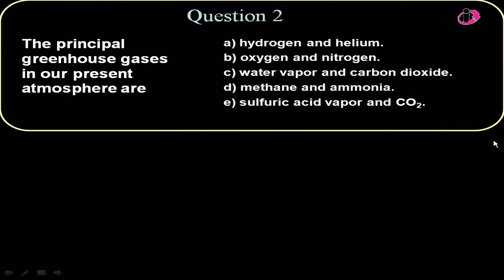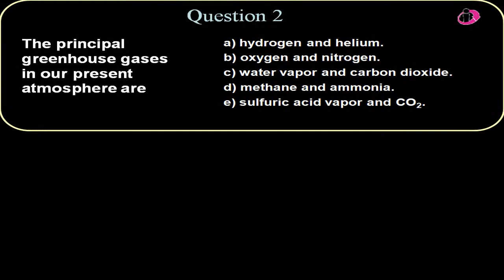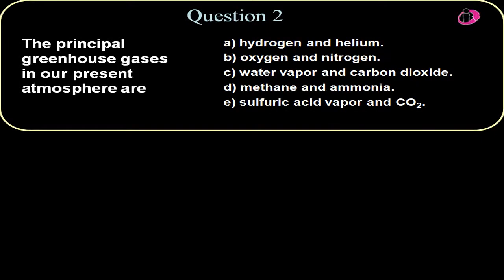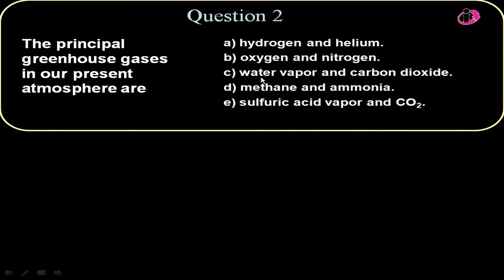Question two. The principal greenhouse gases in our present atmosphere are? Greenhouse gases are those gases that absorb infrared radiation and help warm up the atmosphere. Definitely carbon dioxide is in that. And the other one, the other key one is water vapor.